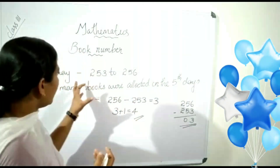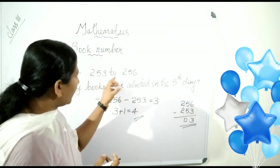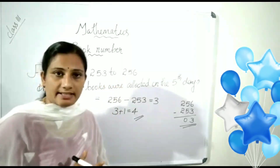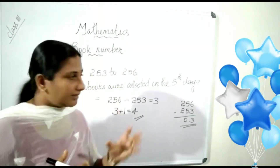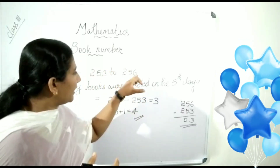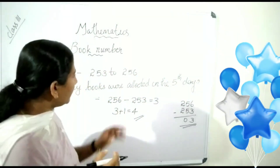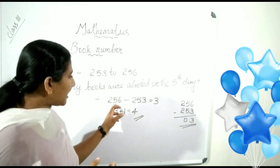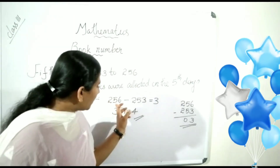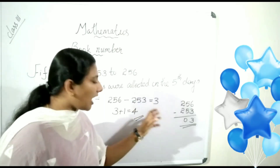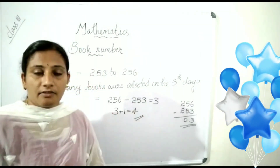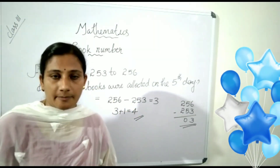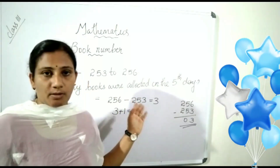I will explain once more. We want to find the number between 253 to 256. We don't know how many books there are. So, how do we find? We want to subtract the small number from the big number. Then, add 1 with the answer. Then, the answer is 4. Let us practice more problems like this.